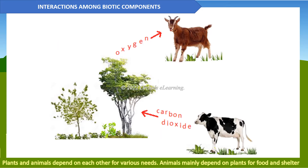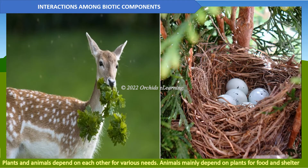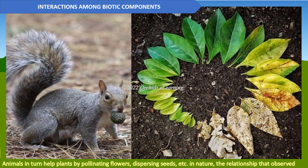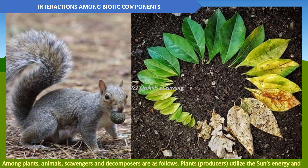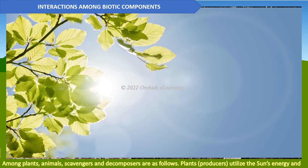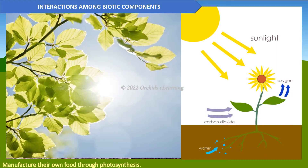Interactions among biotic components: plants and animals depend on each other for various needs. Animals mainly depend on plants for food and shelter. Animals in turn help plants by pollinating flowers, dispersing seeds, etc. In nature, the relationships observed among plants, animals, scavengers, and decomposers are as follows.